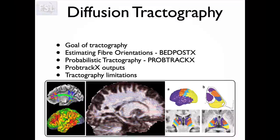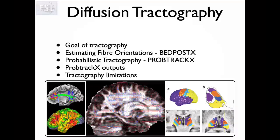In this first talk I will discuss what the goal of tractography is and what we hope to obtain from it. First I will discuss BedpostX, which is the tool in FSL used to estimate the local fiber orientations in each voxel, and then we will see how the FSL tool ProbTrackX uses probabilistic tractography to stitch these fiber orientations together into reconstructions of the major white matter bundles within the brain. We will discuss the various outputs that ProbTrackX can produce, and in the final talk I will discuss some of the limitations of tractography that are important to keep in mind when using this powerful modality.